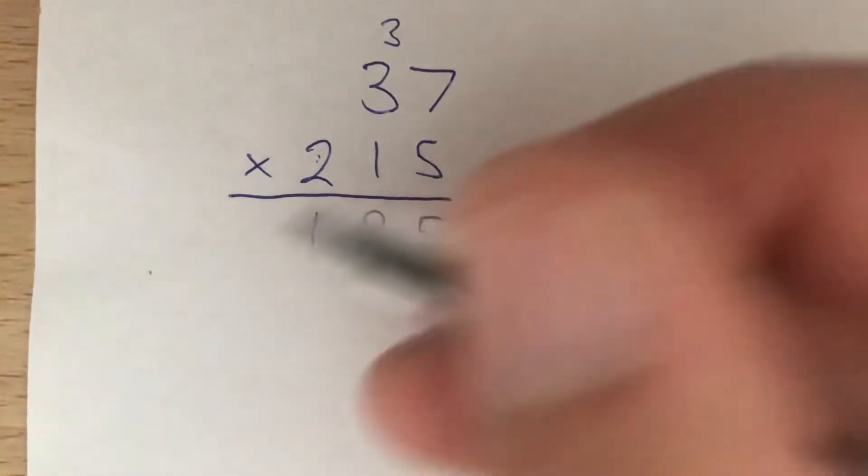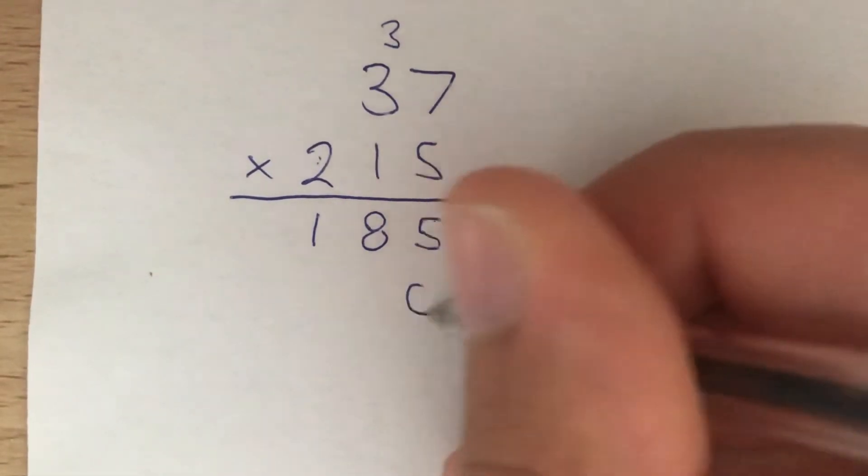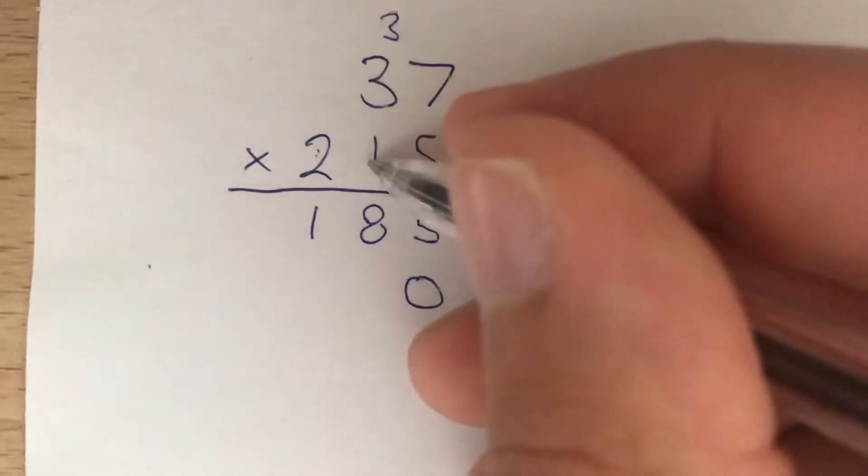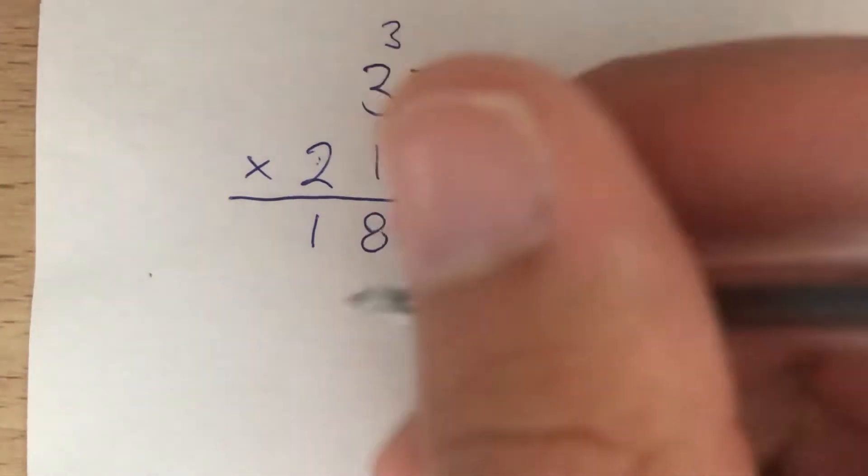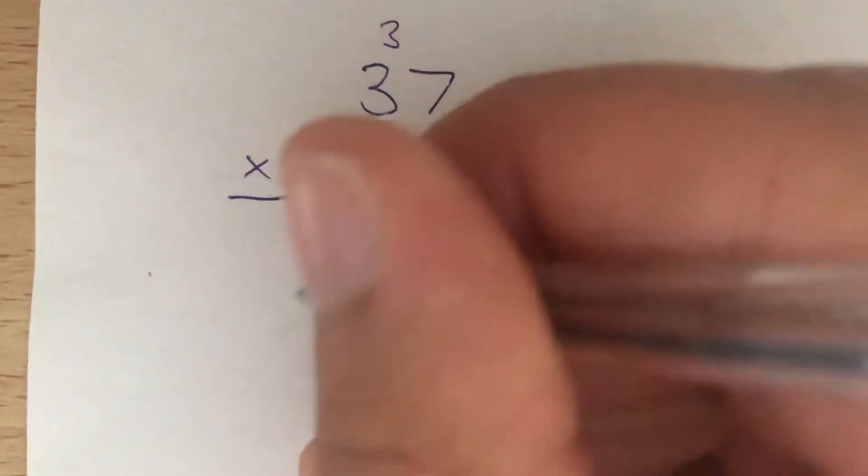Now we're multiplying by this 1, but remember it's not a 1, it's a 10. So we put a placeholder 0 in. 1 times 7 gives us 7, and 1 times 3 gives us 3.